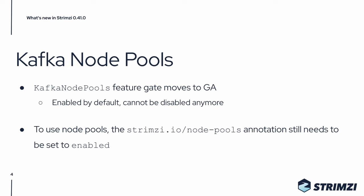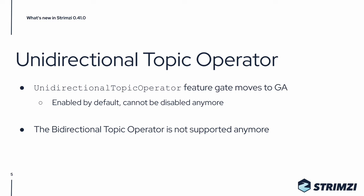The second feature gate graduating is the unidirectional topic operator feature gate. That also means that the old bidirectional topic operator is not supported anymore and has been removed.